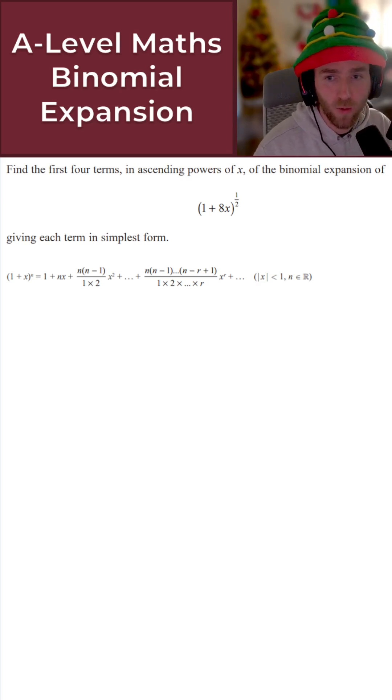Now this question here is pretty straightforward. All we want to do is find the first four terms in ascending powers of X of the binomial expansion of the following, given each term in its simplest form. All very standard stuff. And as you can also see just underneath here, I have also included the relevant result as it is given in your formula book for fractional and negative powers.